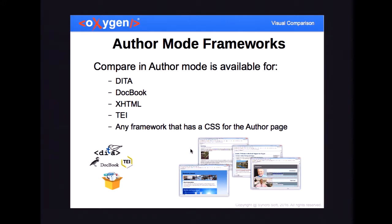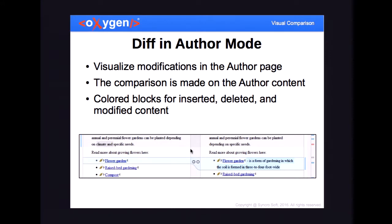This new comparison mode is available for DITA documents, for the book, for DITA documents — but you can also use it for any type of document. You can create a CSS that will allow you to switch to the author page, and then you can use this new comparison mode just by switching to the author page and showing you the differences. Let's go into detail and see what happens in the author page.